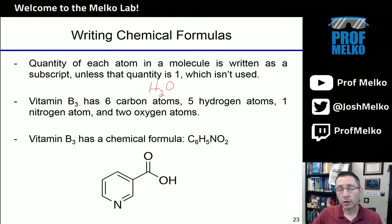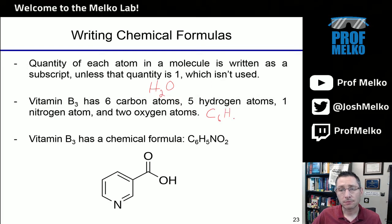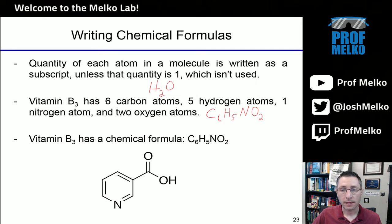Let's look at vitamin B3, a more complicated molecule. If I tell you that vitamin B3 is a molecule with six carbon atoms, you write the symbol carbon followed by the number six as a subscript. Five hydrogen atoms — the symbol for hydrogen is H, there's five of them. One nitrogen atom — the symbol for nitrogen is capital N, there's one of them, so the one is implied. And two oxygen atoms — the symbol for oxygen is O, and there's two of them. So C6H5NO2 is the chemical formula for B3.